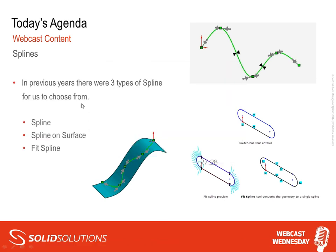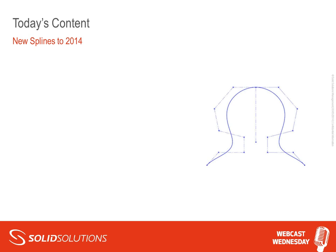Starting with the types of splines we've had in previous years in SolidWorks: we've got the standard spline shown in the picture at the top right, spline on surface shown in the bottom left image, and fit spline which allows you to take bits of geometry from an existing sketch and fit a spline on top, converting that geometry into a single spline. New to 2014, we have style splines.